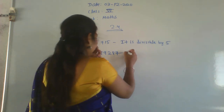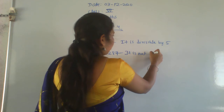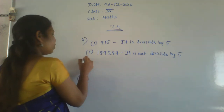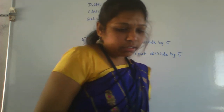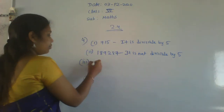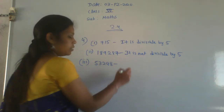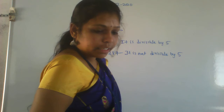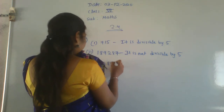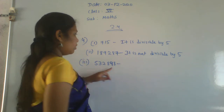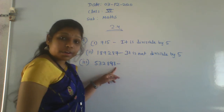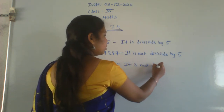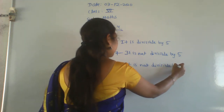Third number is 532898. The last digit is 8, which is neither 5 nor 0. Therefore it is not divisible by 5.